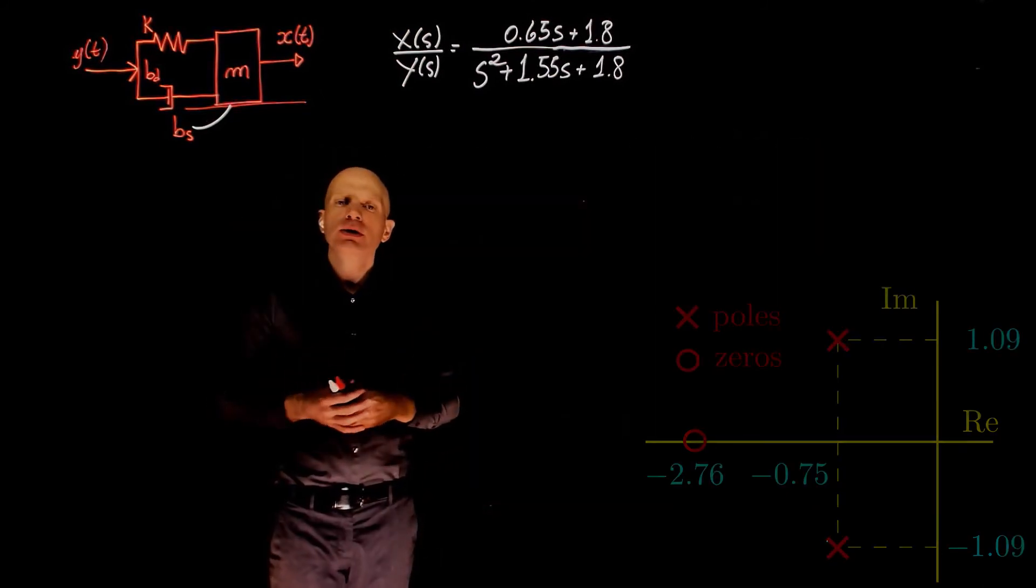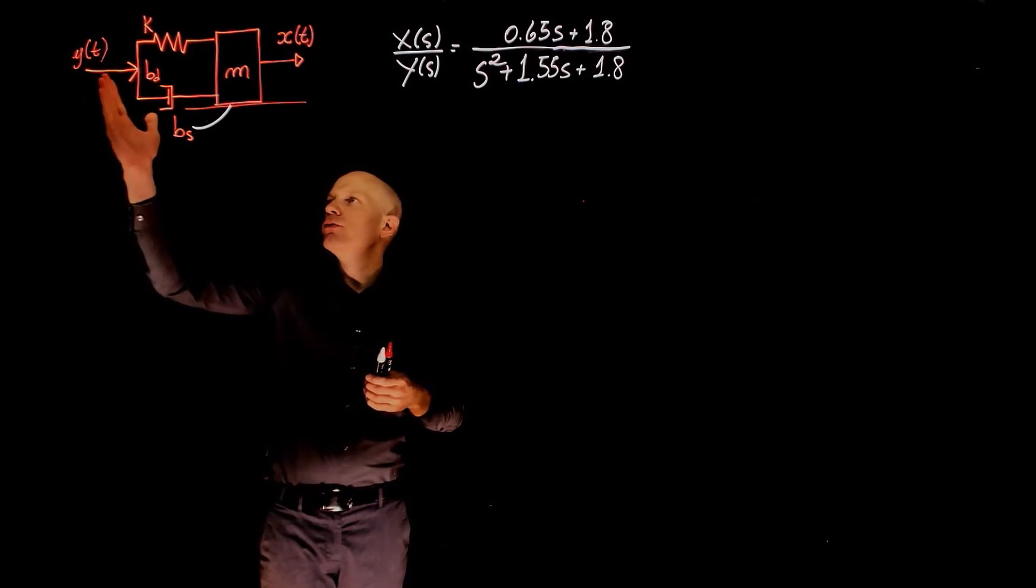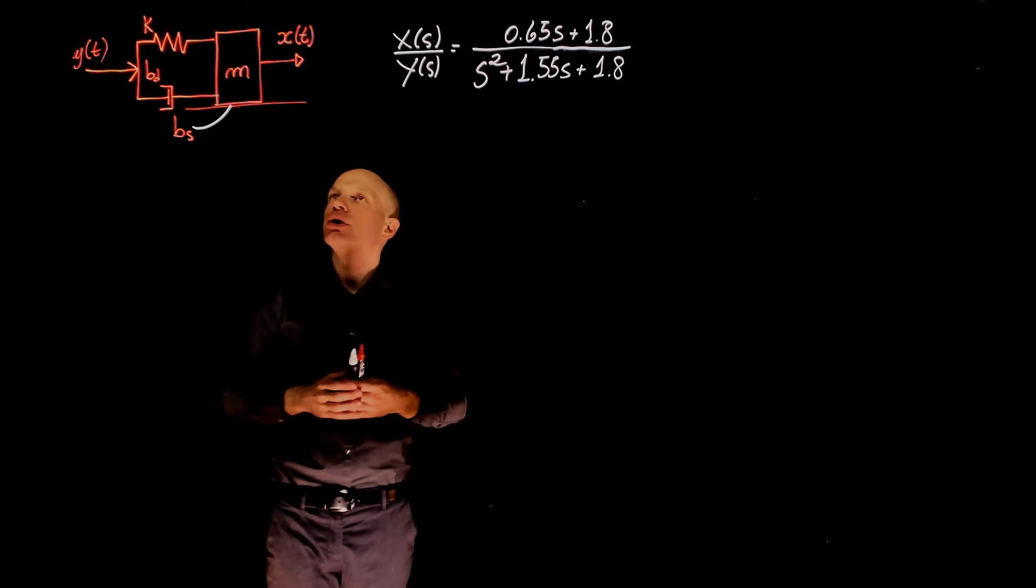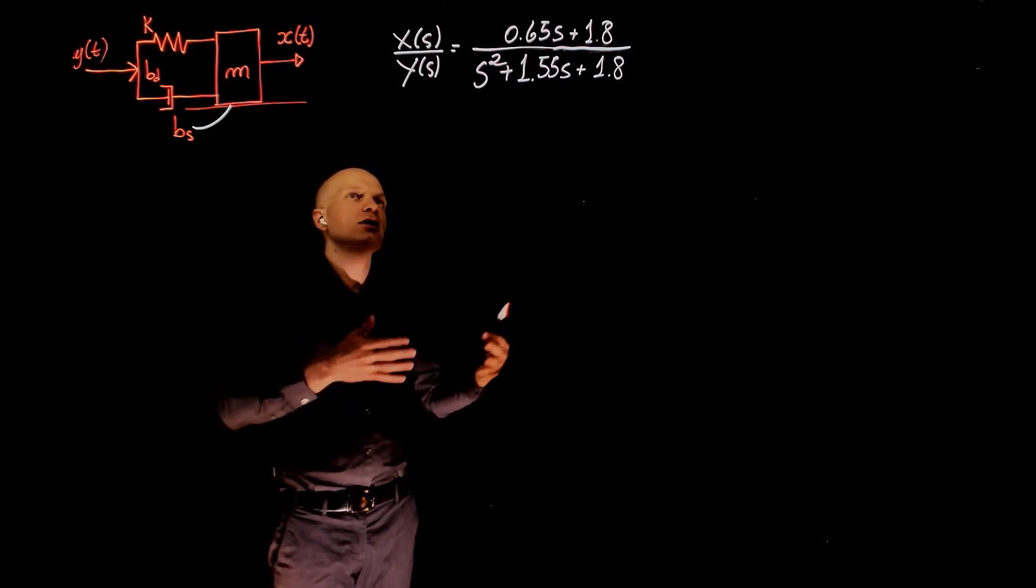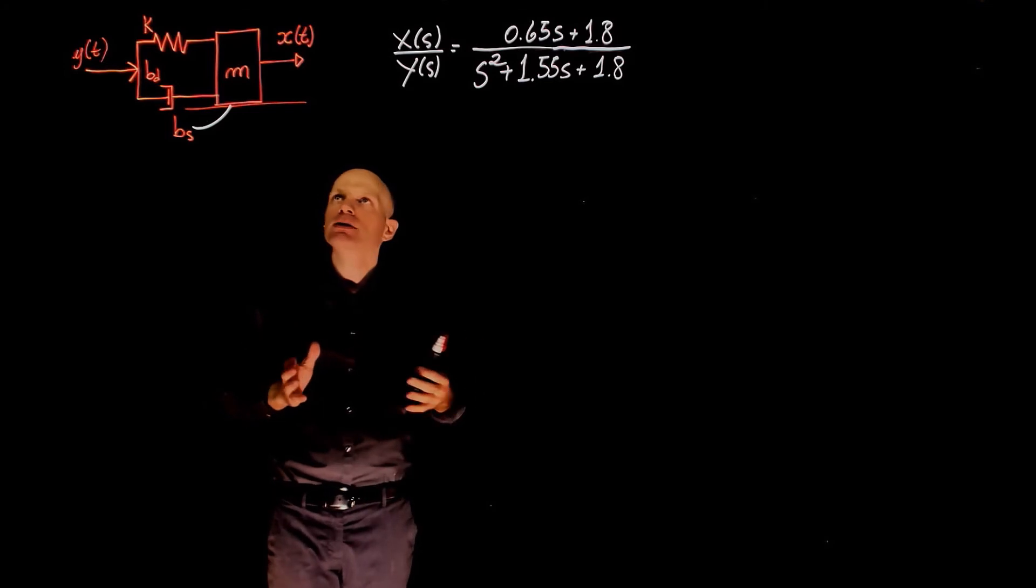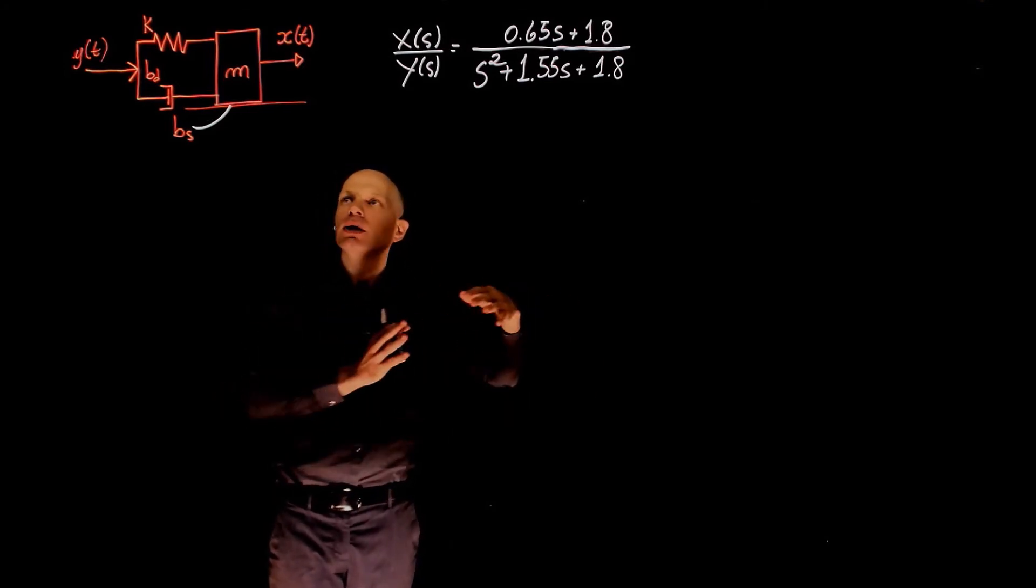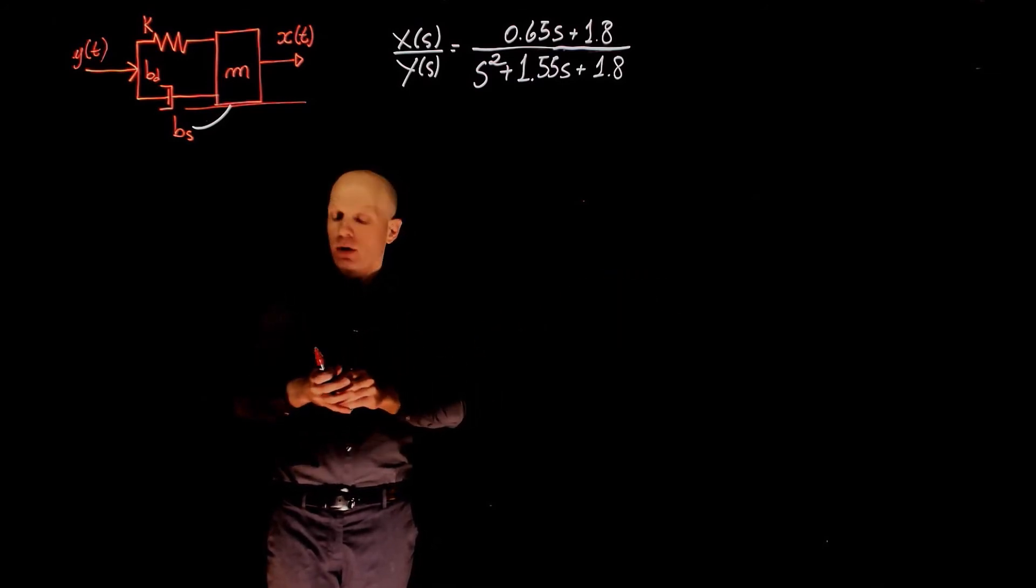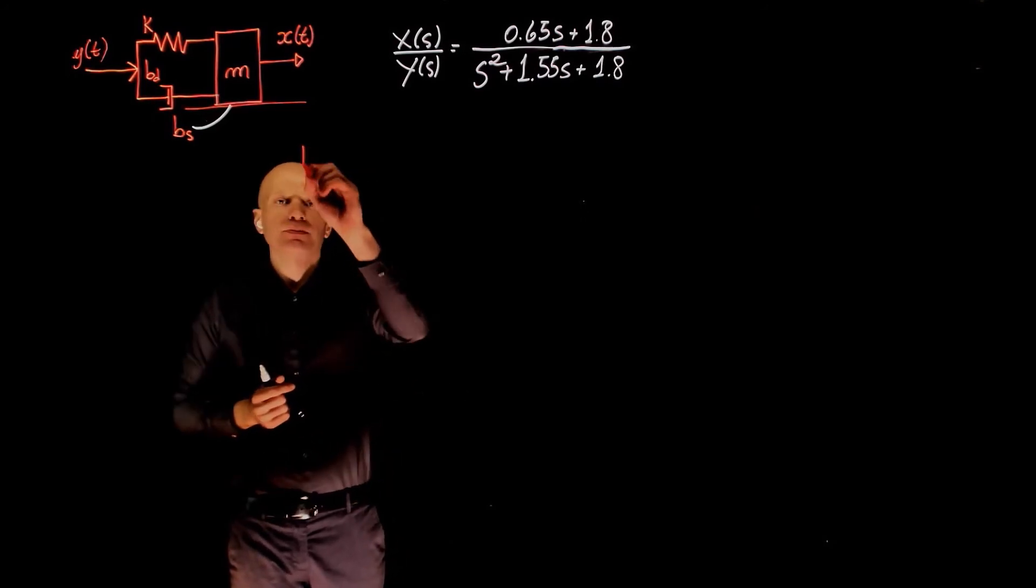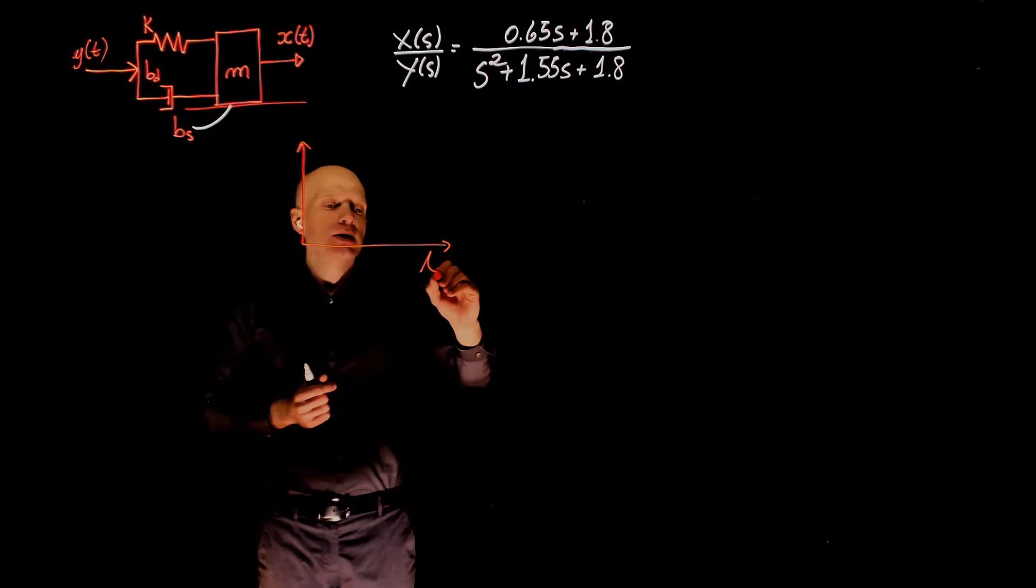Now let's assume that a unit displacement is applied to y(t). Say we move this side of the spring by one unit, one meter or one millimeter, and you're interested in the steady state value of x(t). The steady state value means the final value that x(t) will reach once the position doesn't change over time. By applying a displacement at y(t), what we are actually applying to the system is a step input.